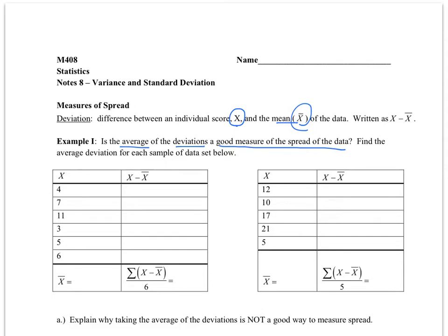In each of these problem sets, I want you to find the mean, find x-bar, find x minus x-bar, and then add all those up and average them. For example, if we were to find the average in this case by adding up all these scores and dividing by 6, we find that the average is equal to 6. So here, x minus x-bar would be 4 minus 6, which equals negative 2. 7 minus 6 equals 1. Go ahead and complete both of these tables and find the sum of those values divided by 6.